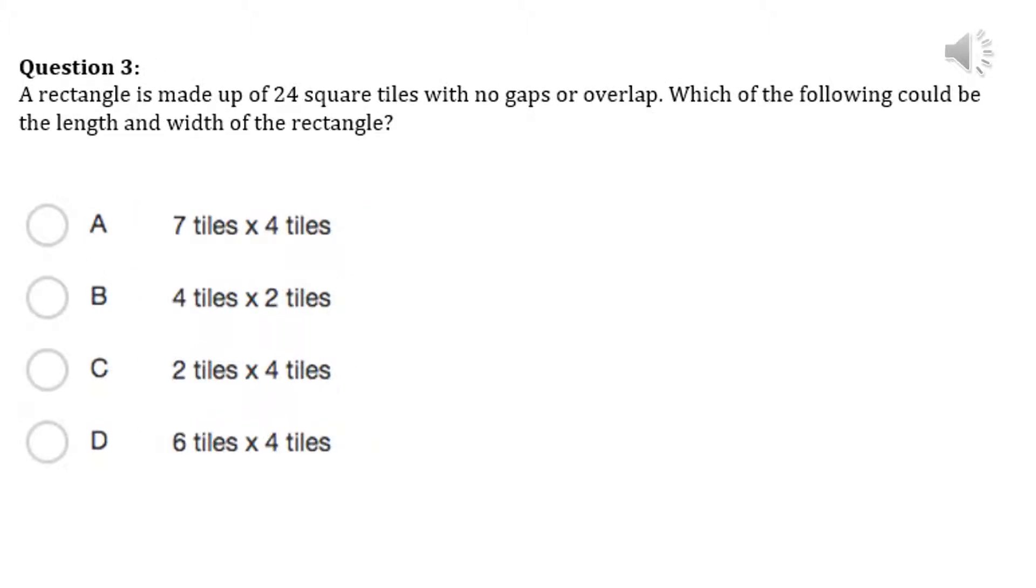Question 3. A rectangle is made up of 24 square tiles with no gaps or overlaps. Which of the following could be the length and width of the rectangle?